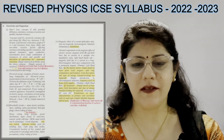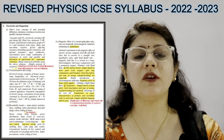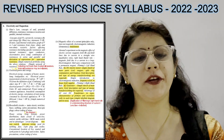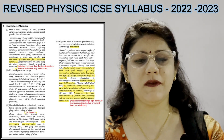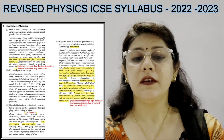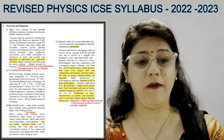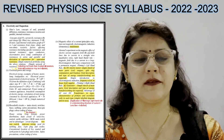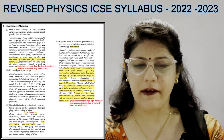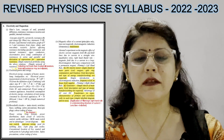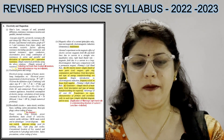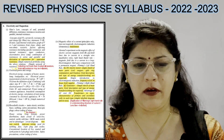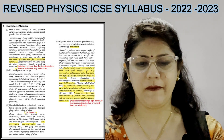From the unit on Electricity, the derivation of expression for equivalent resistance is reduced from the syllabus. Simple networks of resistors including not more than four external resistors may be included, and internal resistance may be included as stated in the syllabus. So the derivation is again excluded from this year's syllabus.